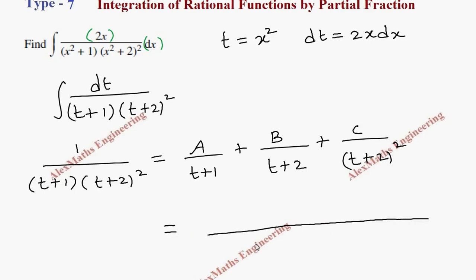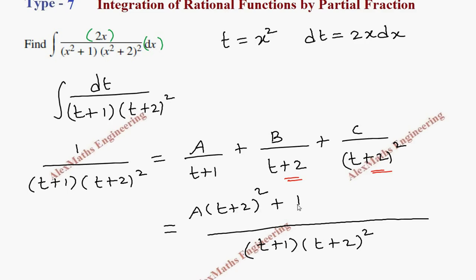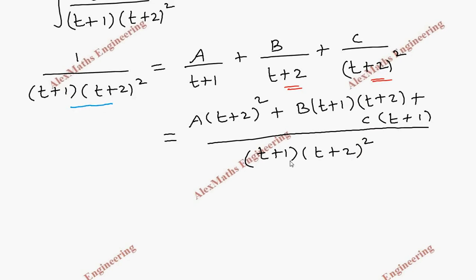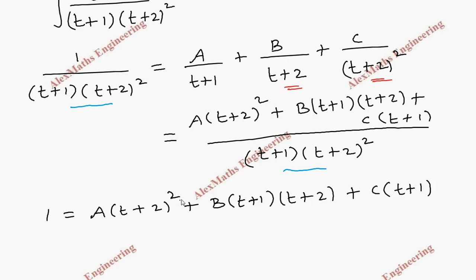Taking the LCM of (t+1)(t+2)² — we take the highest power — and multiplying through: the (t+1) cancels giving A(t+2)², then (t+2) cancels giving B(t+1)(t+2), and the last term gives C(t+1). So we get: 1 = A(t+2)² + B(t+1)(t+2) + C(t+1).